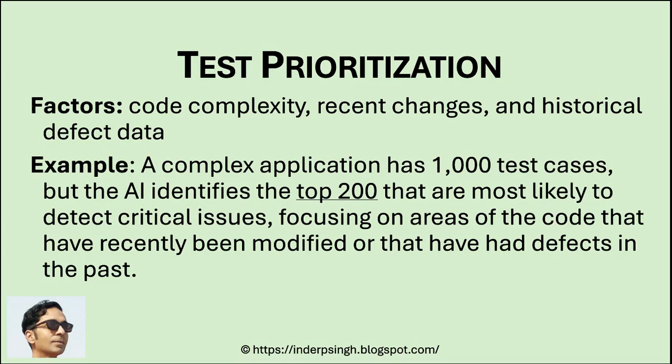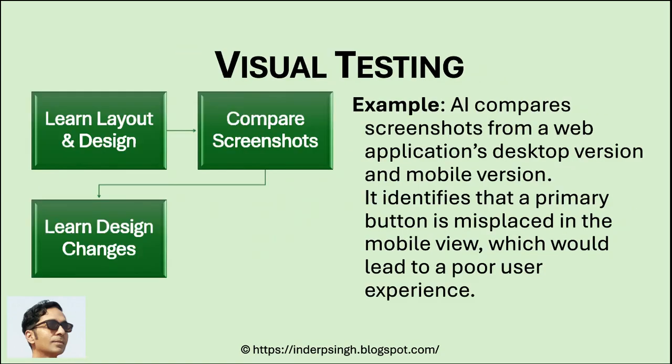For example, in a complex application with 1,000 test cases, the AI identifies the top 200 that are most likely to detect critical issues, focusing on areas of the code that have recently been modified or that have had defects in the past.